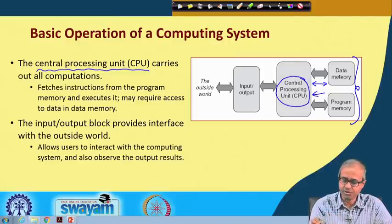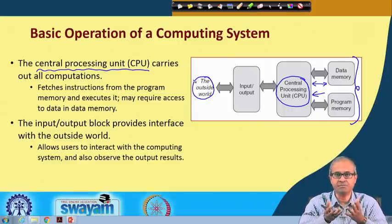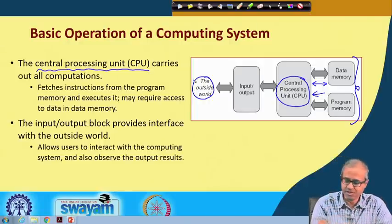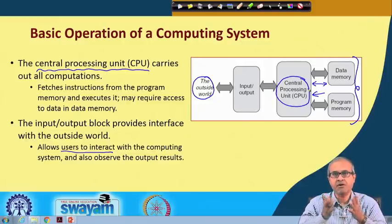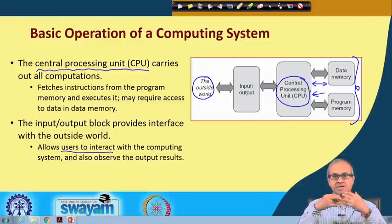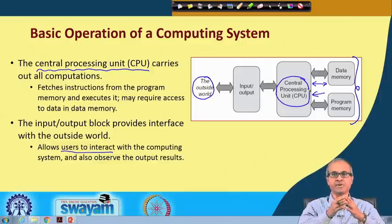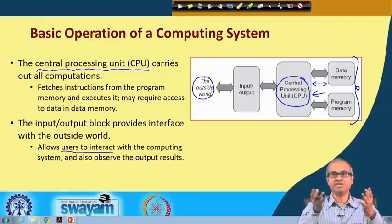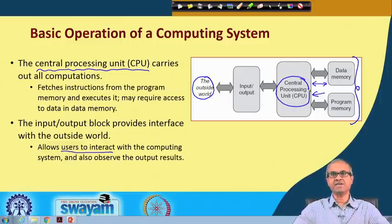In addition to processing, the computer system often needs to interface or communicate with the outside world. The outside world is typically the user who is using a computer system for conventional systems like a desktop or a laptop. The input output subsystem allows users to interact with the computing system. When we talk about embedded systems, the outside world may not always be a human being — it may be the environment. The system senses some temperature, pressure, humidity, or other parameters of the environment as inputs, and can take corrective action like turning on a heater or compressor as output.